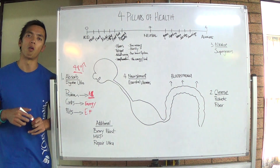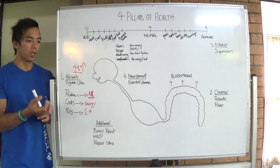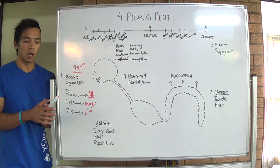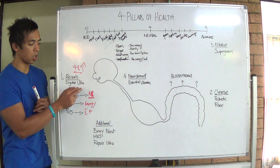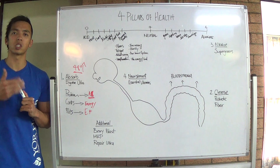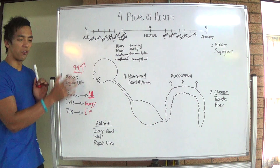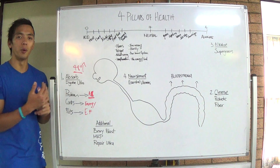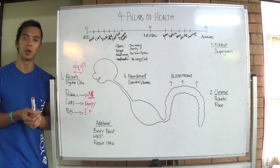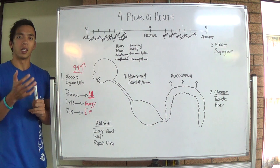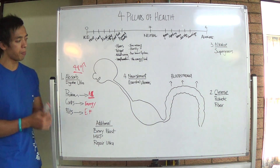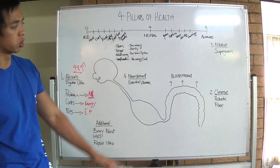The solution is a digestive ultra — a plant-based enzyme tablet that you take with your meal, whether lunch or dinner, when you're eating cooked food or a large quantity. You take it with your meal to help break down the food so your body doesn't have to work so hard. A lot of people in society need this because of the amount of fast food and cooked food they're eating.